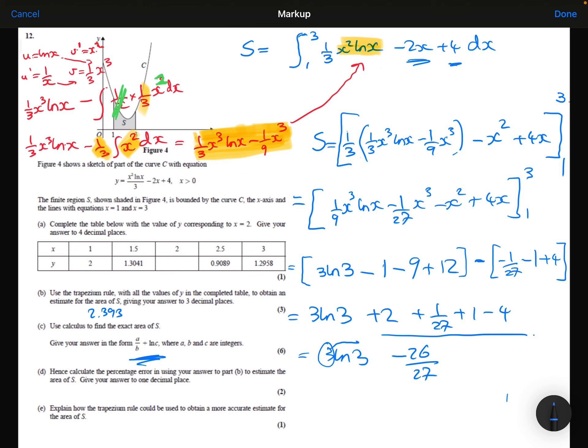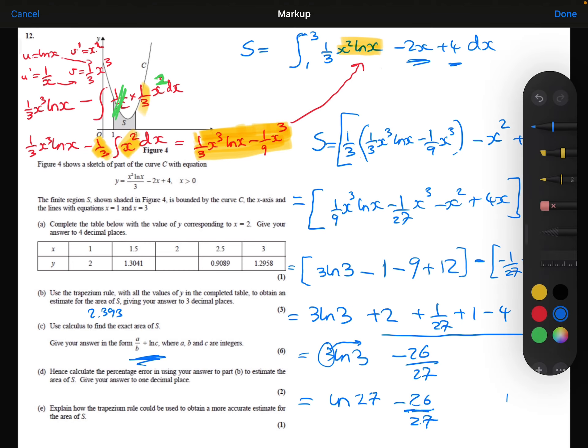So I'm going to take this 3 and put it as a power there, 3 to the power of 3. 3 cubed is 27. So this is my answer to Part C. This is the exact area of S.